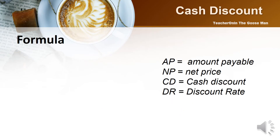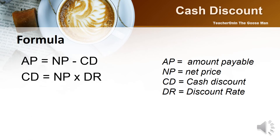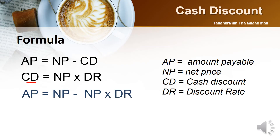Let's cover the formulas. Amount payable equals net price minus the cash discount. Also, cash discount equals net price times discount rate. If I want to get the amount payable, I substitute the value of cash discount — which is net price times discount rate — then factor out the common factor of net price. This results in: amount payable equals net price times (1 minus discount rate).